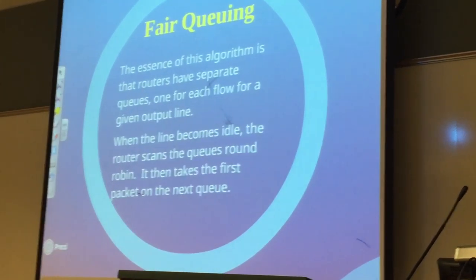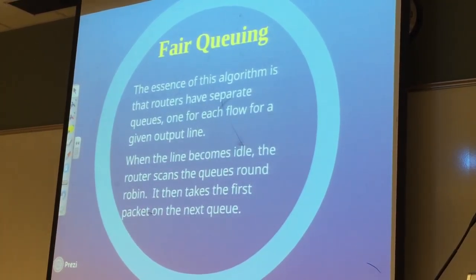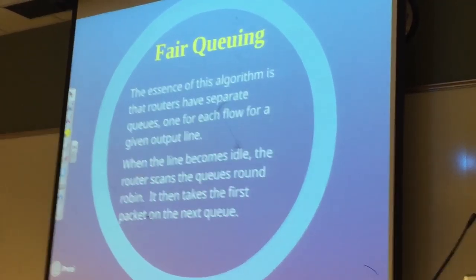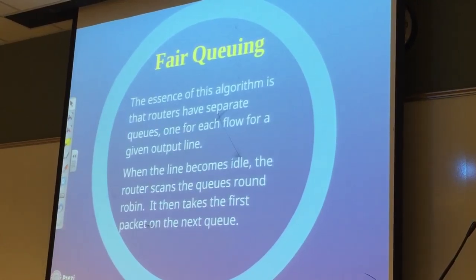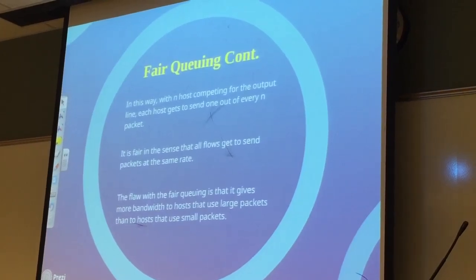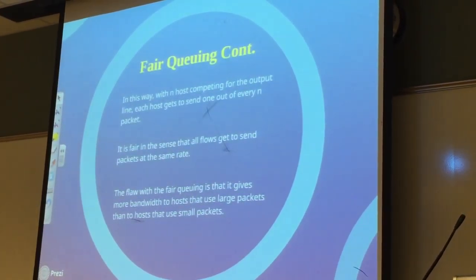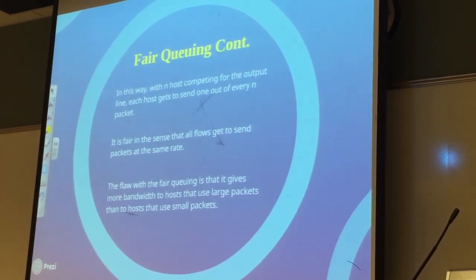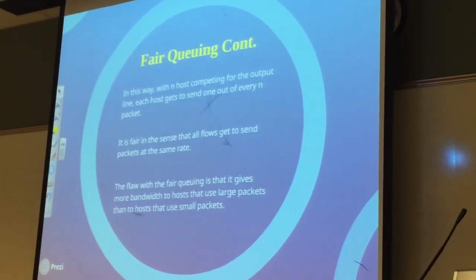The next Packet Scheduling algorithm is Fair Queuing. The essence of this algorithm is that routers have separate queues, one for each flow for a given output line. When the line goes idle, the router scans the queues round-robin and takes the first packet on the next queue. In this way, with any number of hosts competing for the output line, each host gets to send one out of every n packets. It is fair in the sense that all flows get to send packets at the same time. However, a flaw is that it gives more bandwidth to hosts that use larger packets than to hosts using smaller packets.